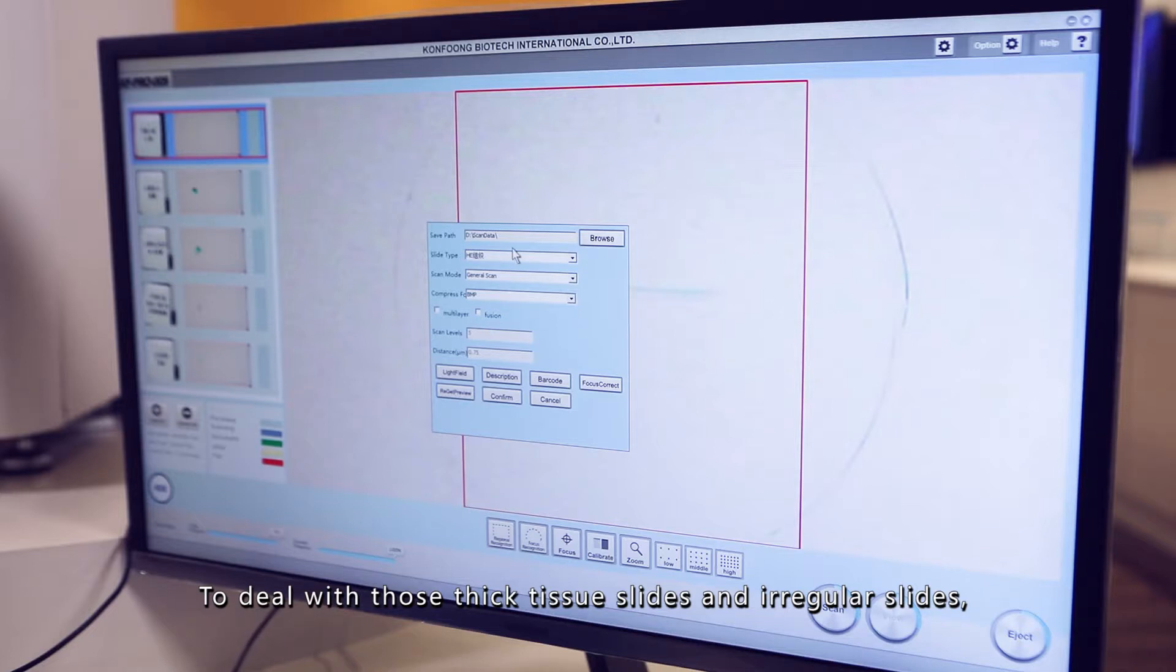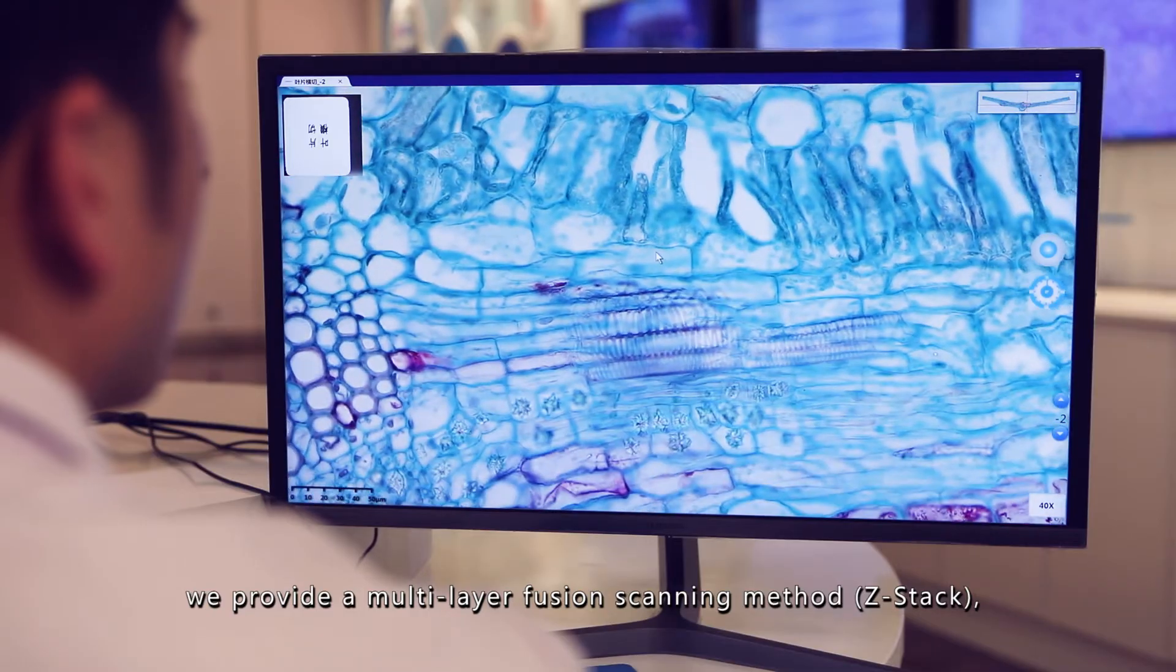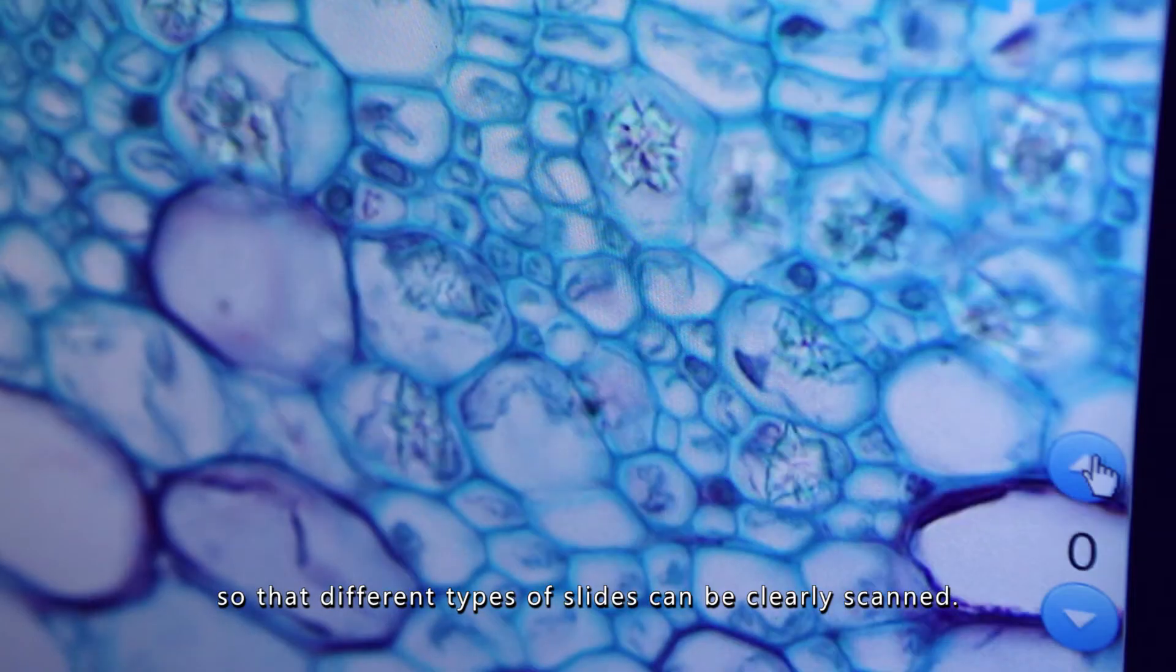To deal with thick tissue slides and irregular slides, we provide a multi-layer fusion scanning method, Z-Stack, so that different types of slides can be clearly scanned.